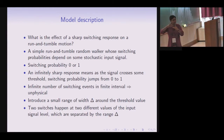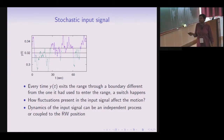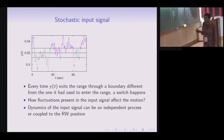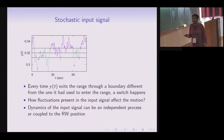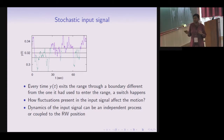We therefore introduce a small range of width delta around the threshold value, and assume that two switches — run to tumble and tumble to run — happen at the two ends of that range. Below this range the cell can only run; above it the cell can only tumble. A switch occurs whenever the signal exits the range through a boundary different from the one it entered. We consider two scenarios: one where the signal fluctuation is an independent stochastic process, and another where the signal dynamics depends on the run-tumble walker's dynamics.